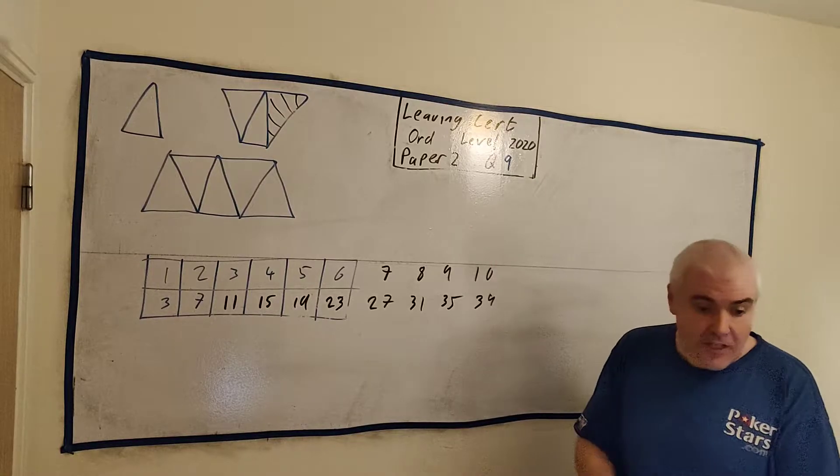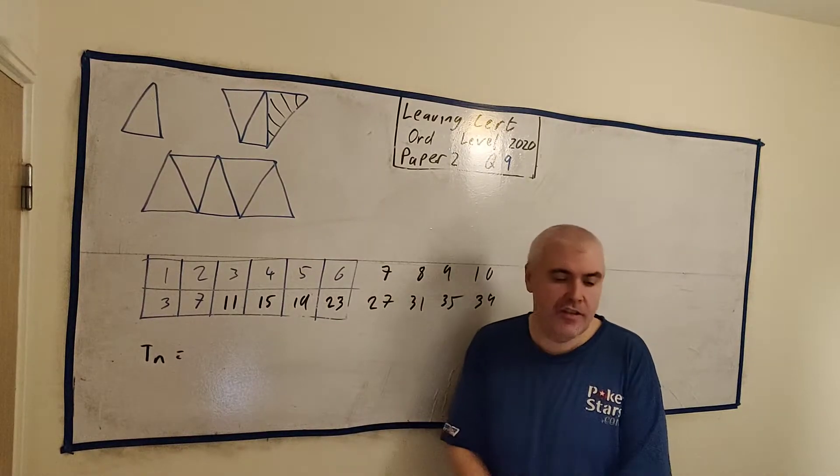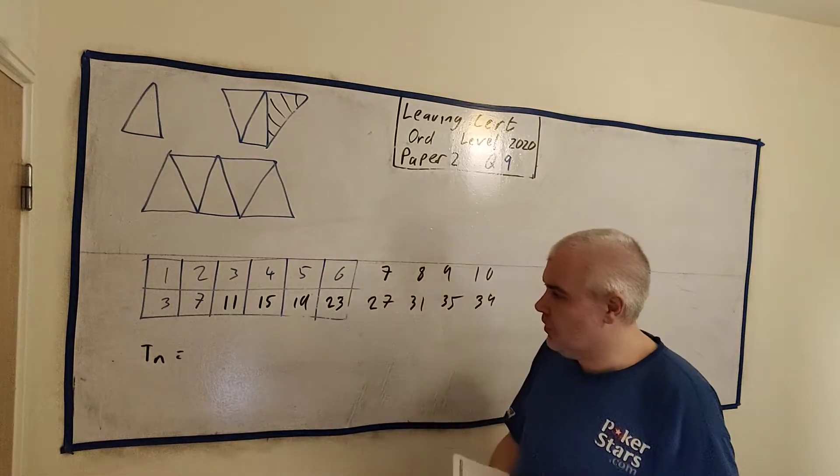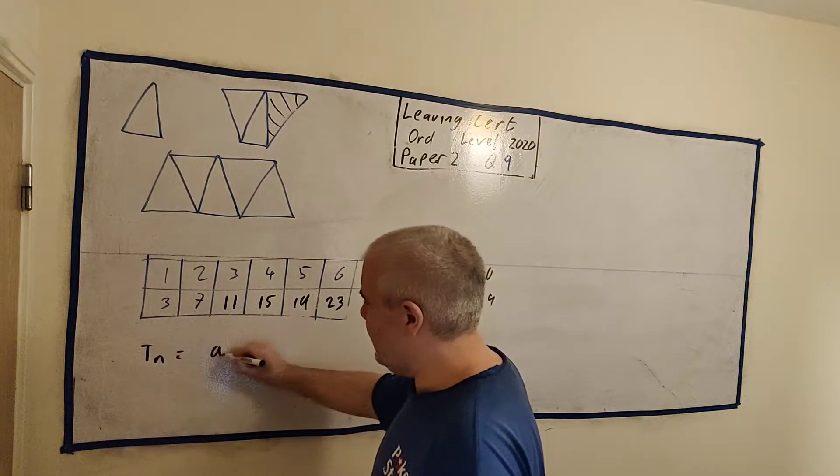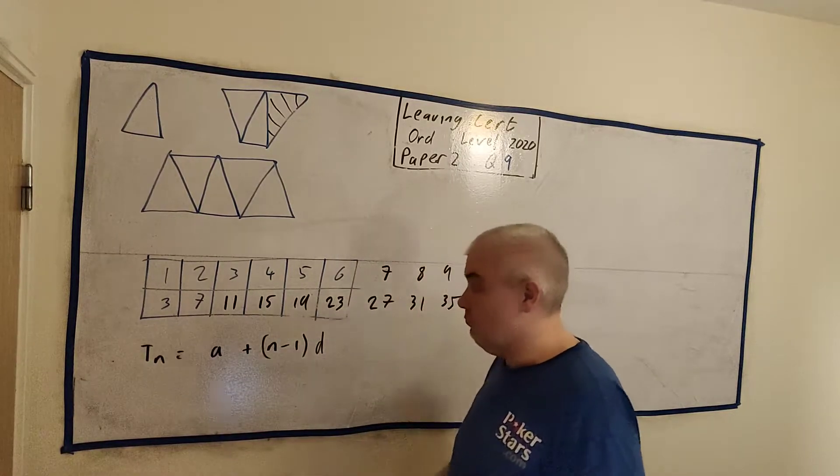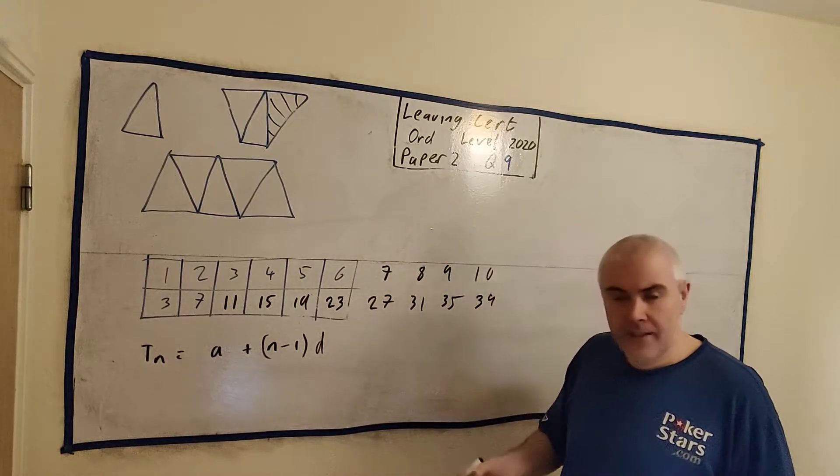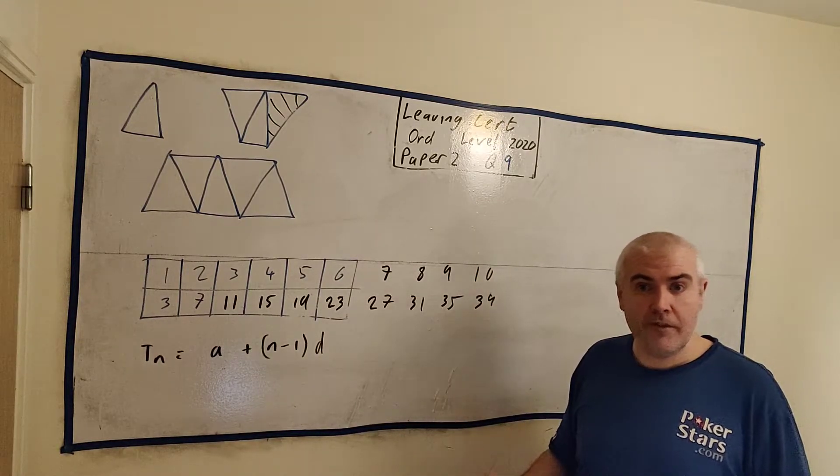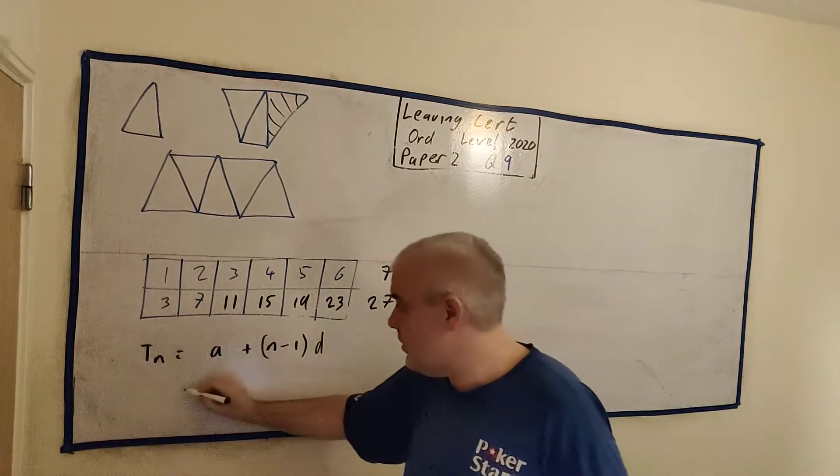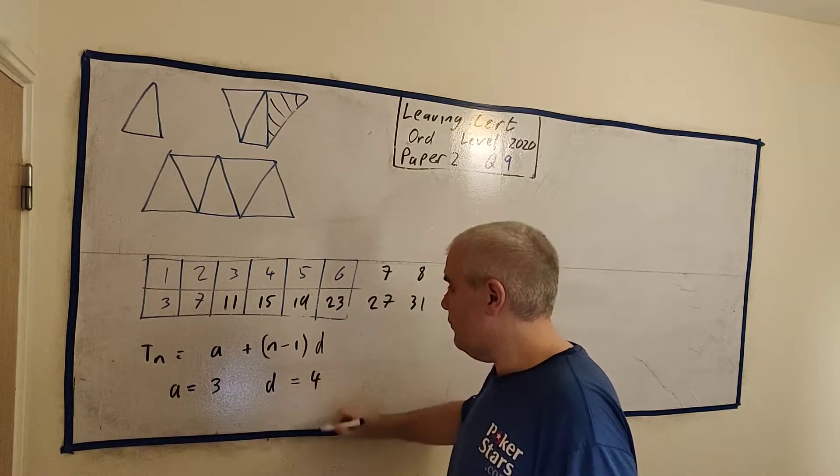The next part then is find a formula for TN. Now this is the bit where students get scared. TN is something we should have seen multiple times in our formula book. There's a formula written right here: A plus N minus 1 multiplied by D. A is usually the first term of a sequence and D is the difference. Here it is: 3, 7, 11, 15, 19. That's the sequence. A is just 3, the first number. D is the difference. In this case, it's 4.